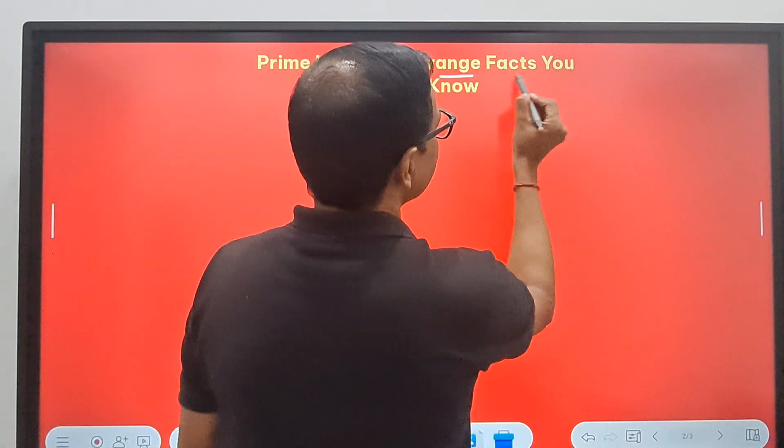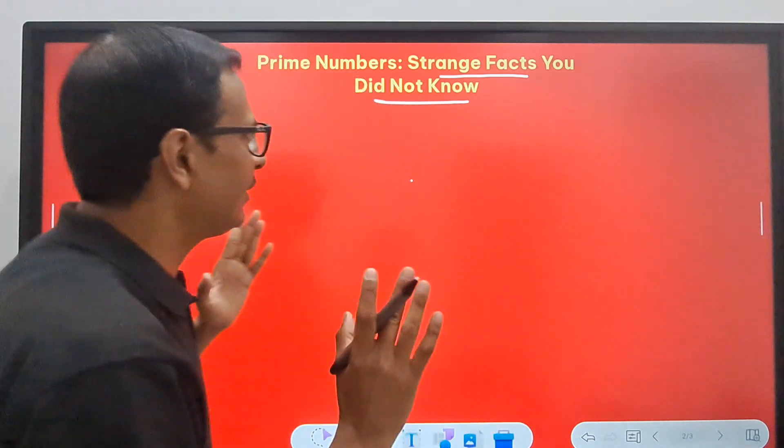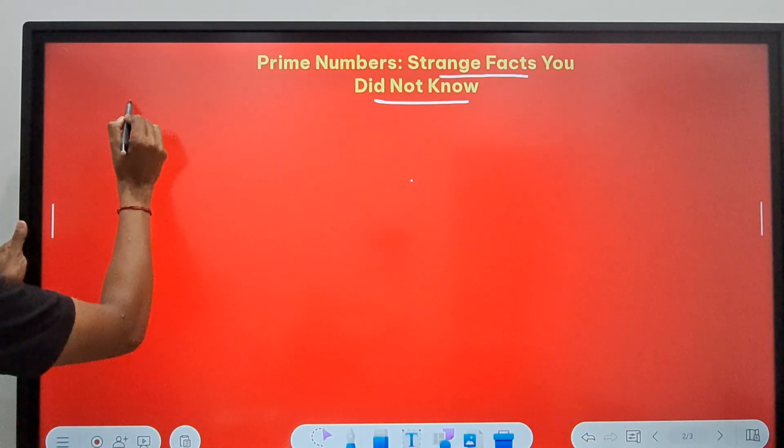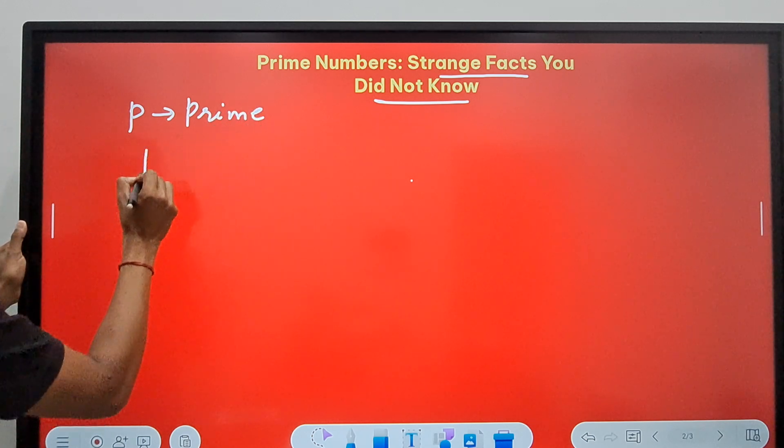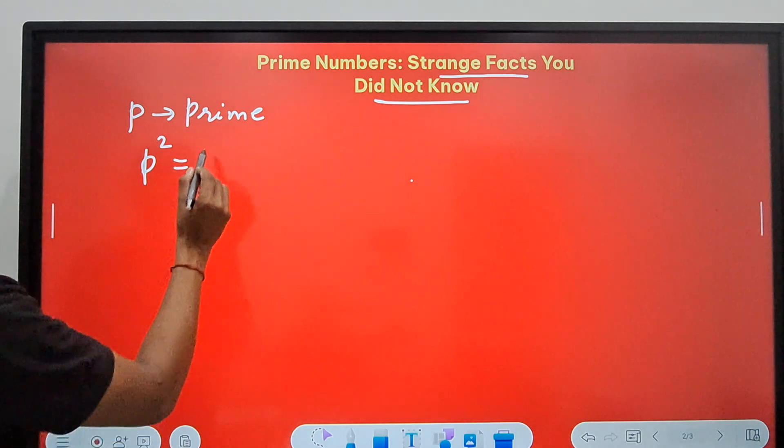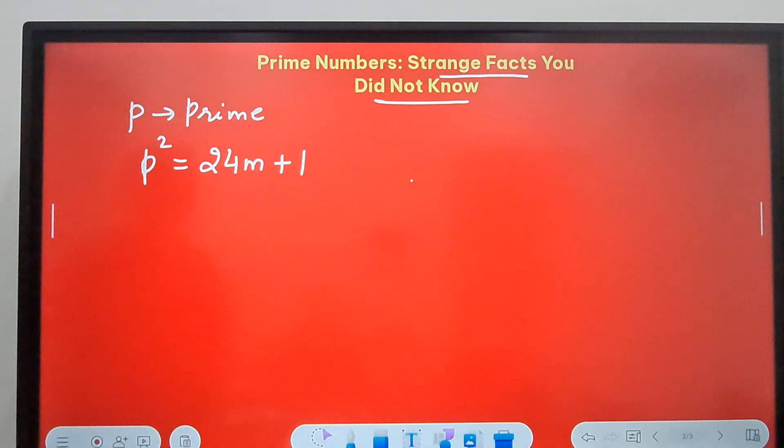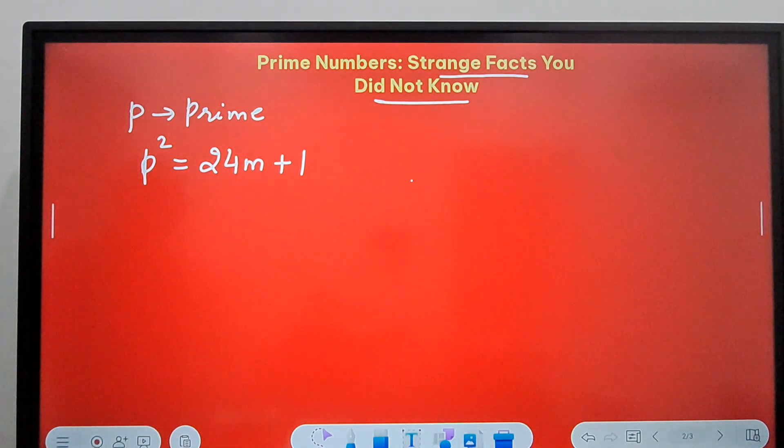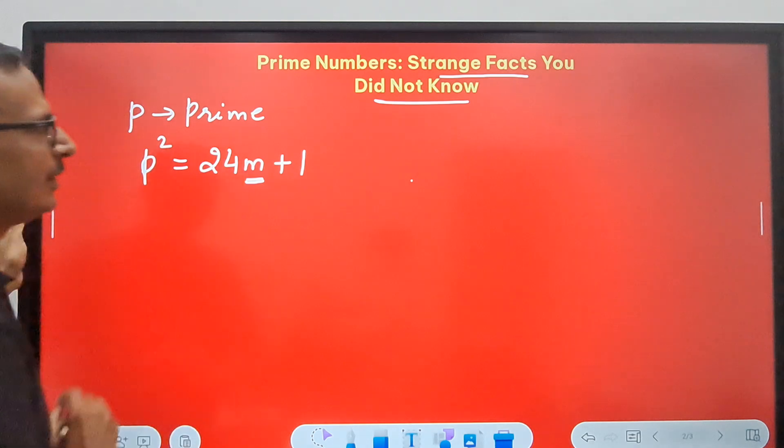Let's move on. We were talking about some strange facts which we don't know yet. So the fact is, suppose p is a prime number, then p square, the square of a prime number, is always of the form 24 times something plus 1.